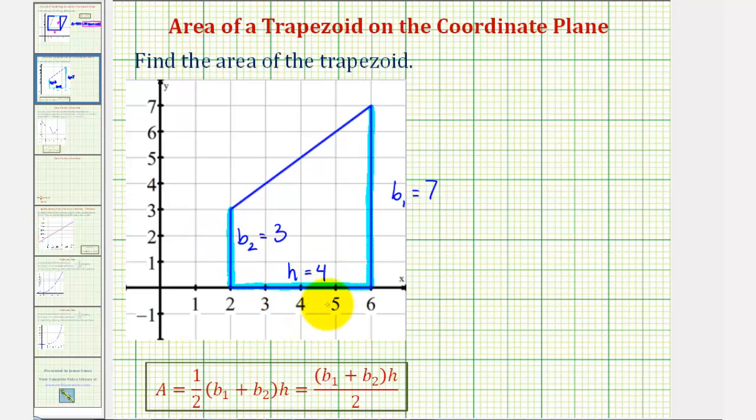This is all the information we need to find the area of the trapezoid. The area is going to be equal to one-half times the sum of the two bases, which would be seven plus three times the height of four.